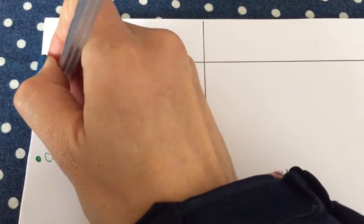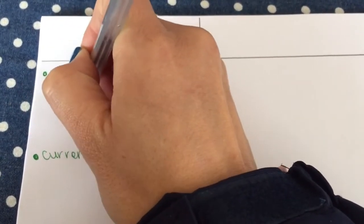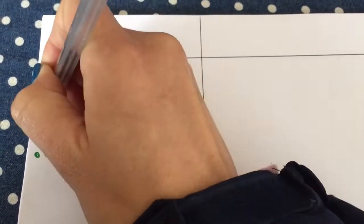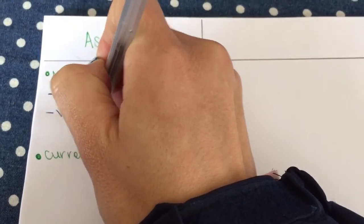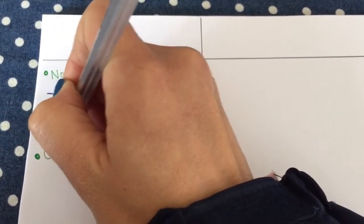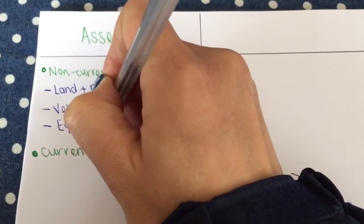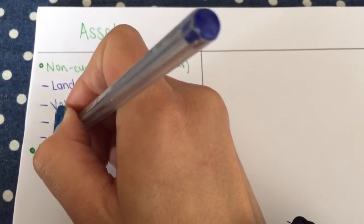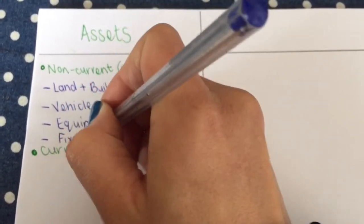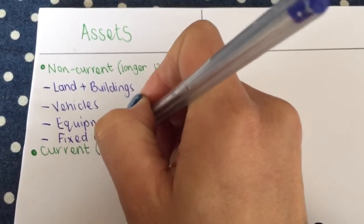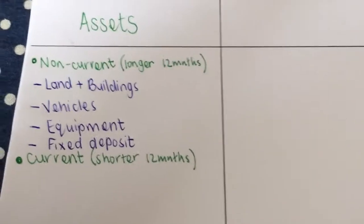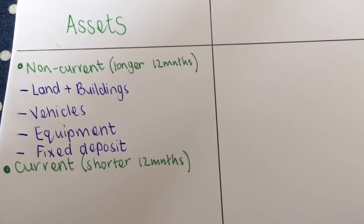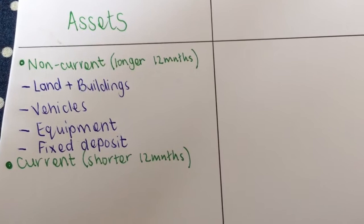Now we're going to classify them. The first one that I start with is land and buildings, then vehicles, equipment—that's the three main ones—and then we also have our financial assets, our fixed deposit. Those four are my non-current assets. You normally have them for longer than a year.